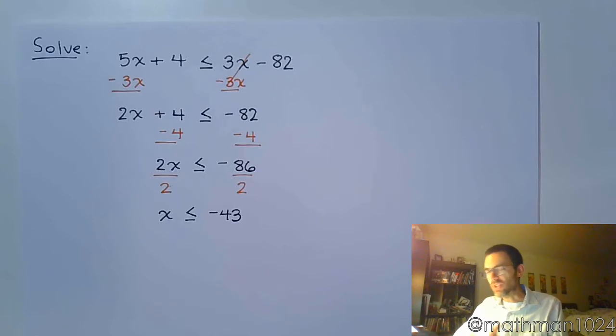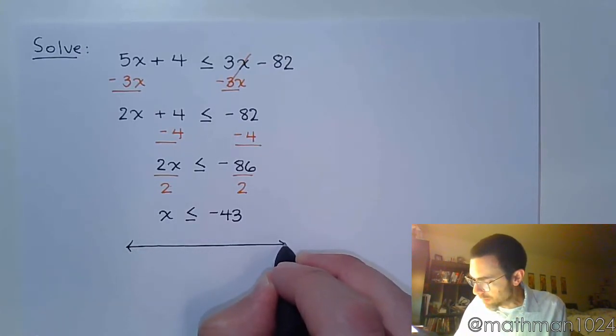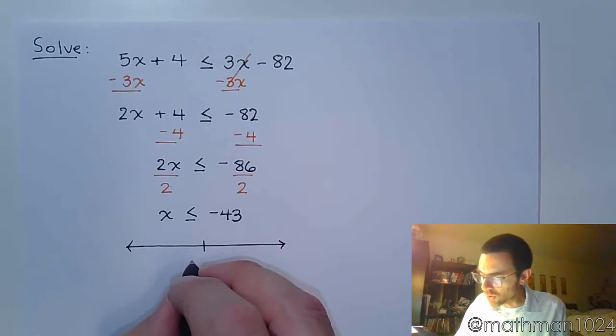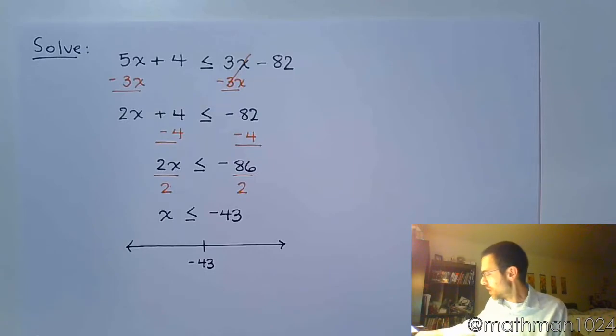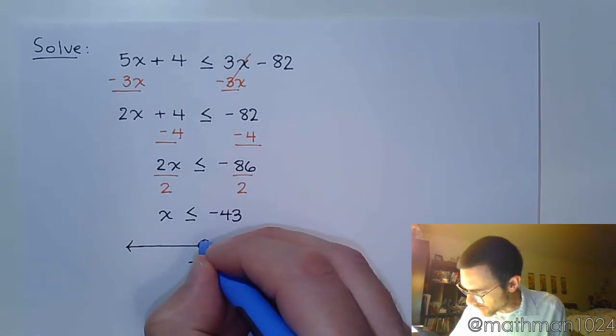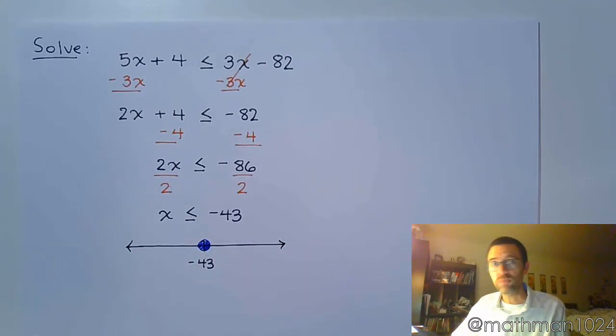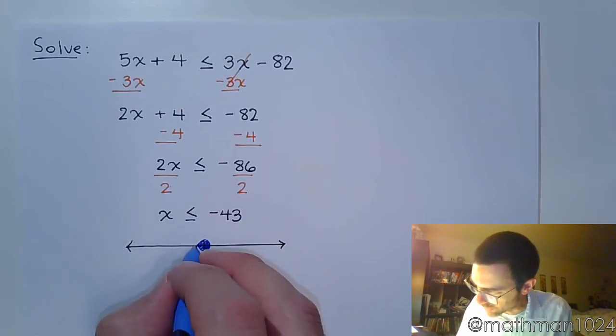Before we just stop here and go on, let's make sure that we write our answer the right way. Most of the time in my math, they're going to say choose the correct graph for the solution set. So let's go ahead and graph this. It says less than or equal to, so that means we're going to be including this guy, so I'm going to fill this in and then I'm going to be shading to the left because it says x, our solutions, are less than negative 43.